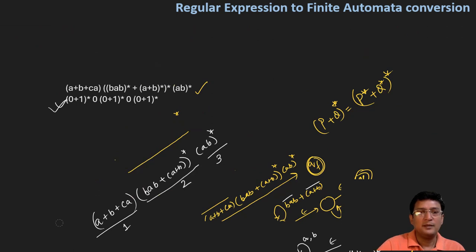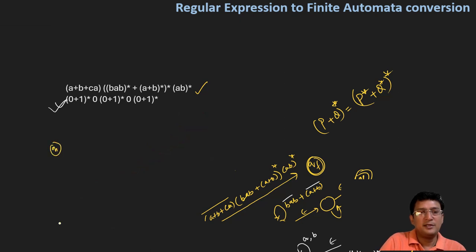For this example, we have an initial state going to a final state. The expression is (0+1)* then 0, then (0+1)*, then 0, then (0+1)*.